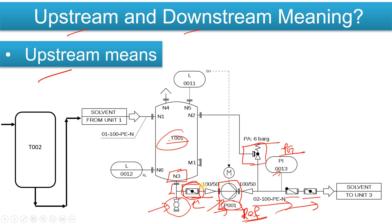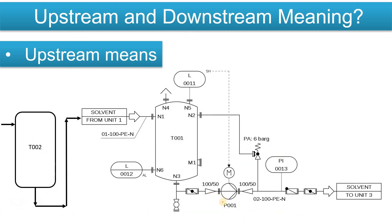I hope you got the point about the meaning of upstream. Now let's suppose someone new to the plant needs to find tank T-002. You can simply say that T-002 is upstream of T-001, meaning this tank comes before T-001 in the process flow. Similarly, taking the pump as reference, the valve on the suction side comes before the pump — that's why it is called upstream. You can take T-001 as reference and identify what comes before it as the upstream.